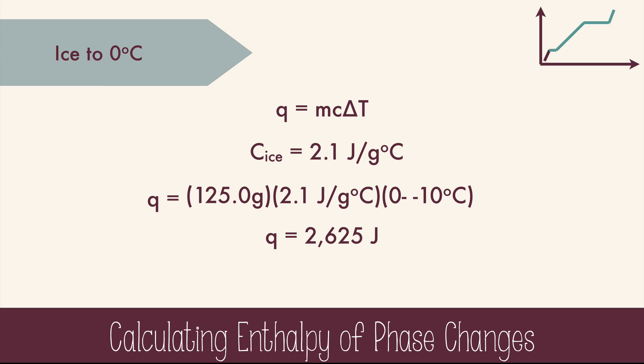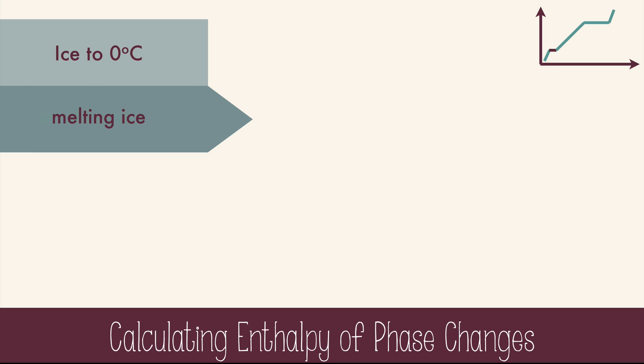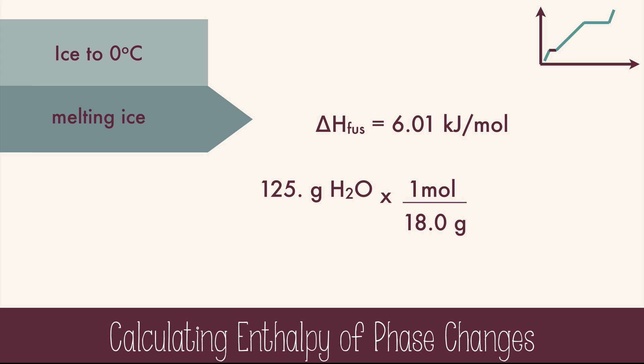We'll save the rounding of the sig figs until the very end. The next step in the diagram is the melting of the ice. Melting ice doesn't change the temperature at all, so we can't use mc delta t because we have no delta t. Instead, we'll use the enthalpy of fusion and some dimensional analysis. 125 grams of water times the molar mass of water times the heat of fusion gives us 41.7 kilojoules or 41,700 joules. Either one here is fine, but when we add these up in the end, we're going to need to be consistent between all of our units, either kilojoules or joules.